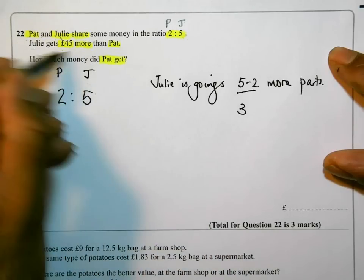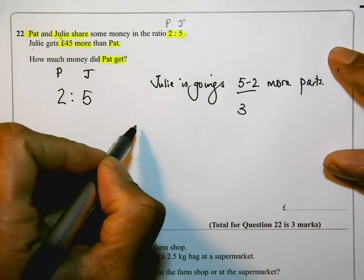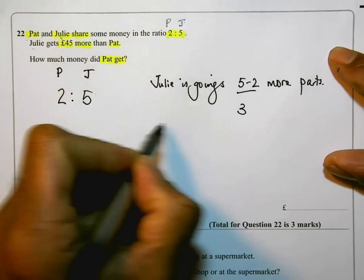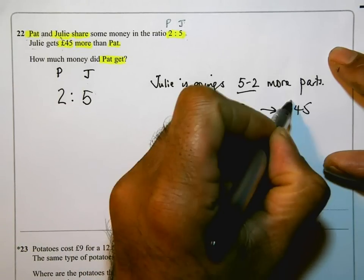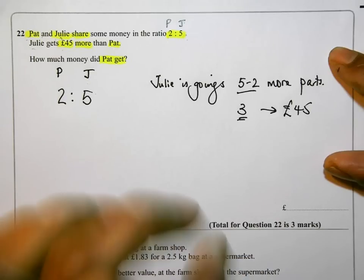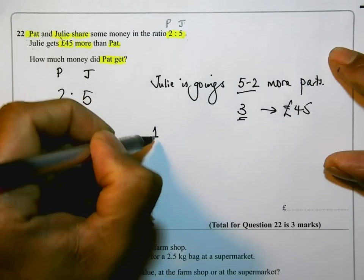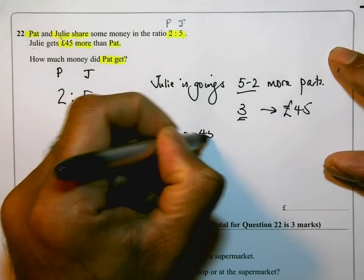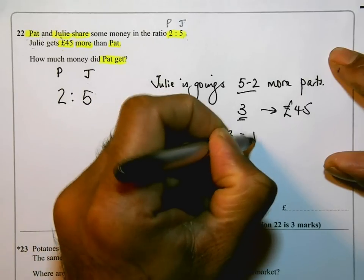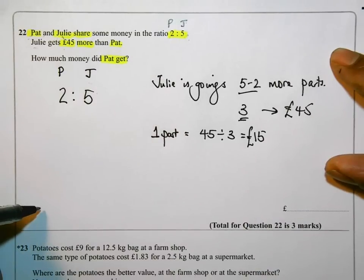Now if she gets £45 more, that means those 3 parts are worth £45. Those 3 parts are worth £45, so each part is equal to 45 divided by 3, which is £15.